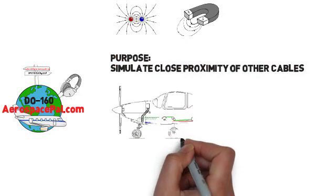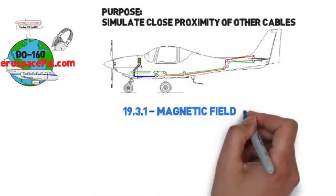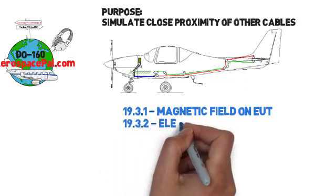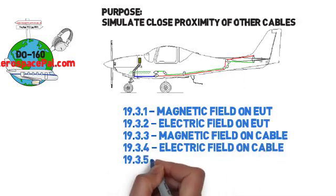So there's five tests for this section: magnetic field on the EUT, electric field on the EUT, magnetic field on the cable, electric field on the cable, and spikes induced on the cable.